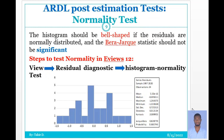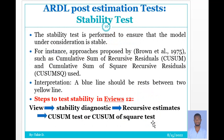The normality test: the histogram should be bell-shaped if the residuals are normally distributed, and the Jarque-Bera statistic should not be significant. The steps in EViews: View, then Residual Diagnostics, then Histogram Normality Test. The probability should be insignificant — that is, greater than your significance level of one, five, or ten percent. If the value is greater than that, the data is normal.